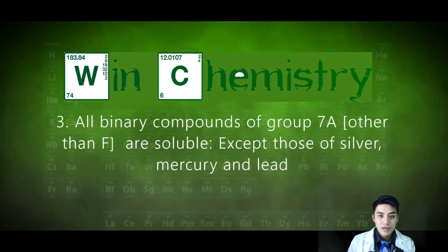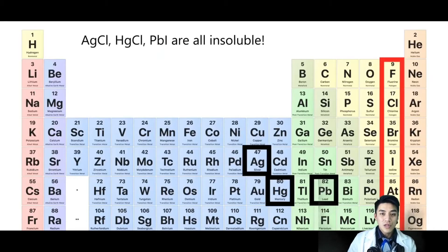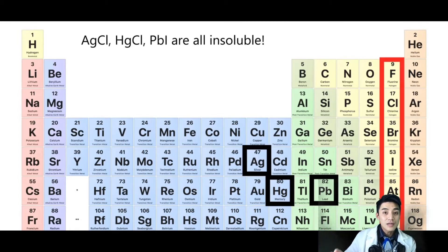Rule three: all binary compounds with Group 7A are soluble except for mercury, silver, and lead. So anything combined with the halogens will dissolve, except for silver, mercury, and lead, which are boxed in black.